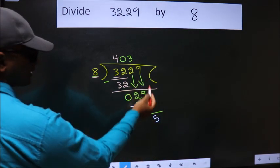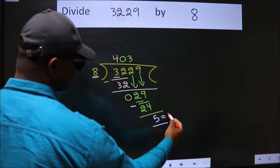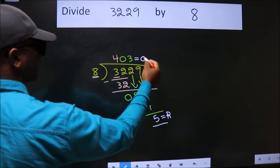No more numbers to bring it down, so we stop here. This is our remainder. This is our quotient. Let's do it again.